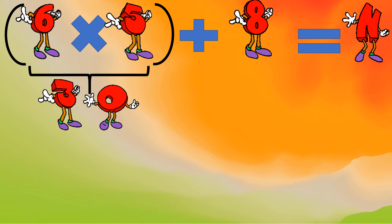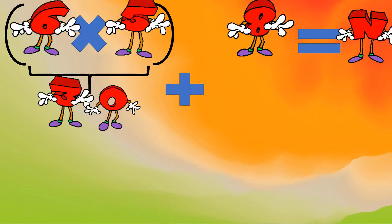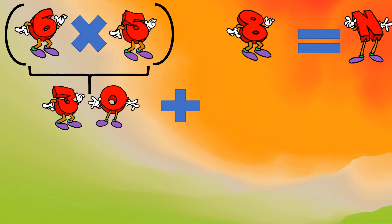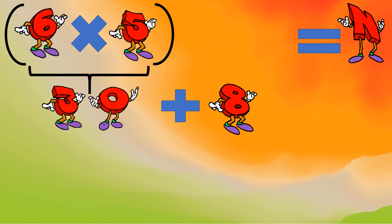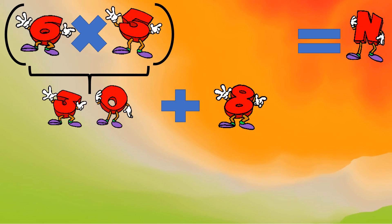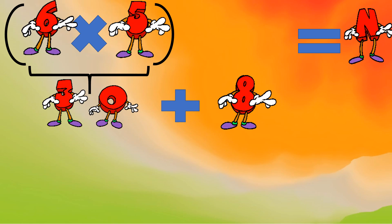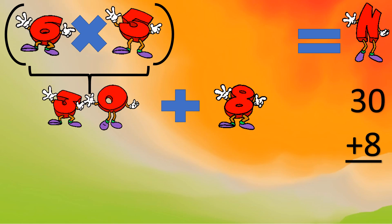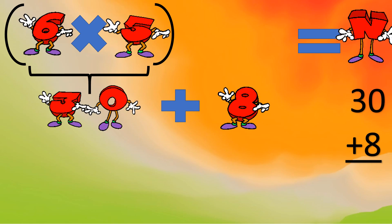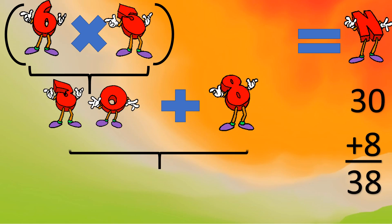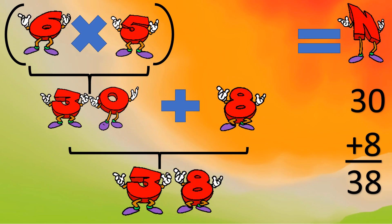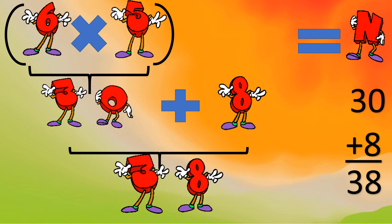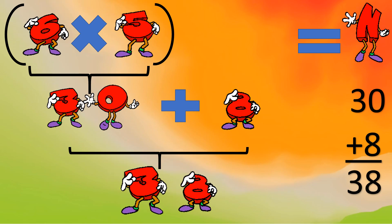The equation is (6 × 5) + 8 = N. First, find the product of 6 times 5, which equals 30. Then bring down the operation and the number: 30 plus 8 equals 38. The answer N is 38.